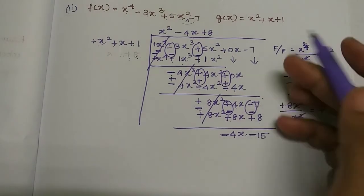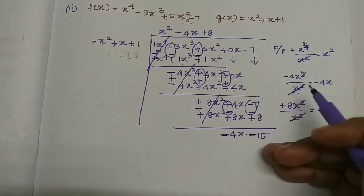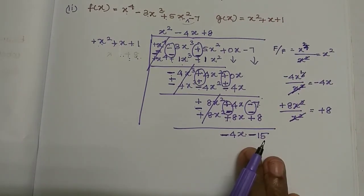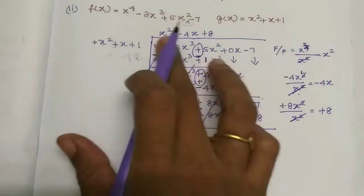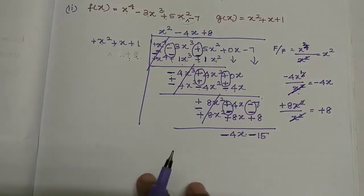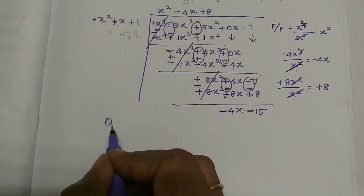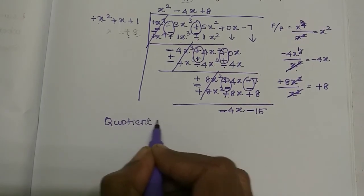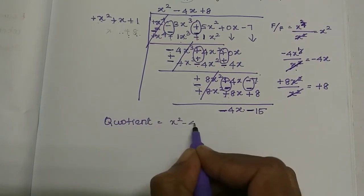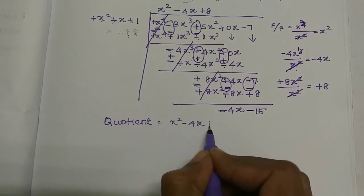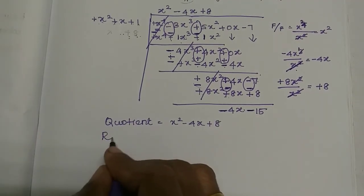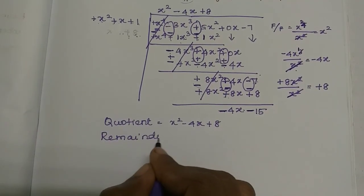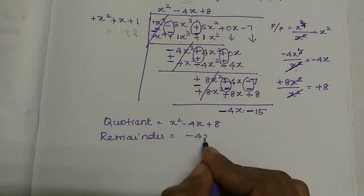After cancellation: two plus terms — add 4x squared plus 4x squared gives 8x squared. Then 4x plus 0x is 4x. Now 7 plus 8 is 15. So quotient is equal to x squared minus 4x plus 8, and remainder is equal to minus 4x minus 15.